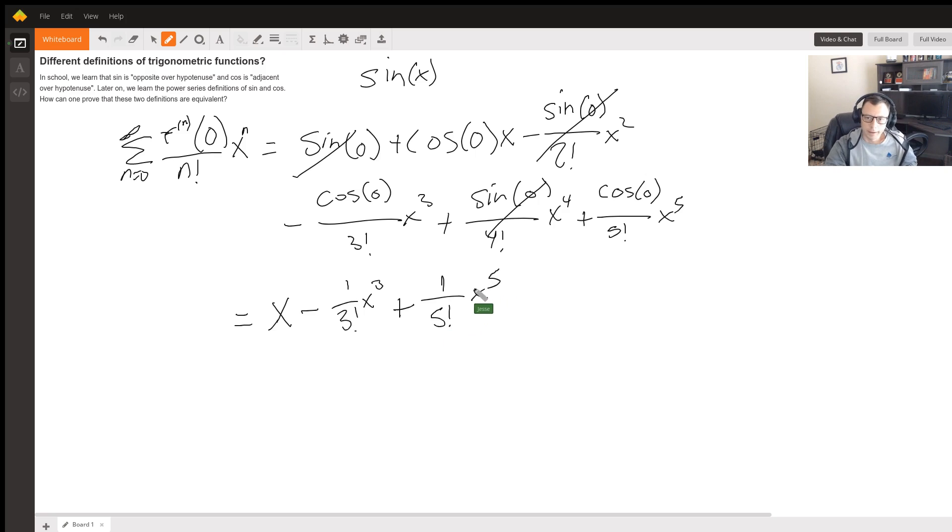And that's how you derive the Taylor series expansion, or in this case, a Maclaurin series expansion of sine of x. So you can see now how this would match with the series that you're looking at. You can do the same thing for cosine. And for those, you get only the even terms instead of only the odd terms that you get for this. So I hope this helps.